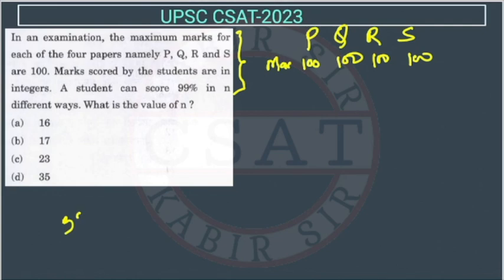The student is scoring 99%, so 99% of how much total marks? Total marks are 400 because each paper is of 100 marks. If you calculate this, this will be 396. So the student is getting 396 marks. Now how can he get it?